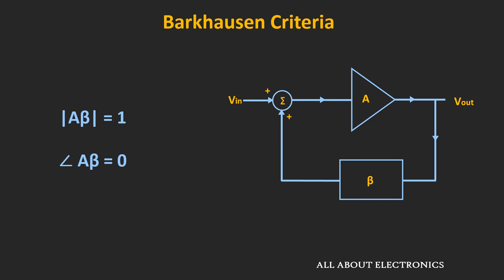So in an oscillator, to get sustained oscillations, two conditions must be satisfied. The first is that the product Aβ should be equal to 1. The second is that the phase shift of this loop gain should be equal to 0 — meaning that whenever the input signal travels through the amplifier and the feedback circuit, the overall phase shift introduced by the circuit should be zero. These two criteria are known as the Barkhausen criteria for oscillation.